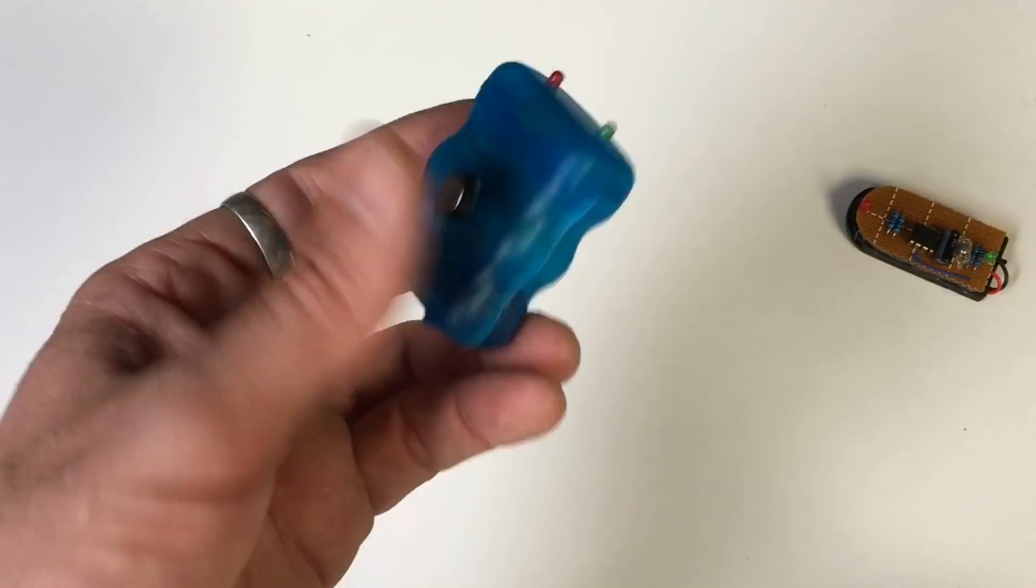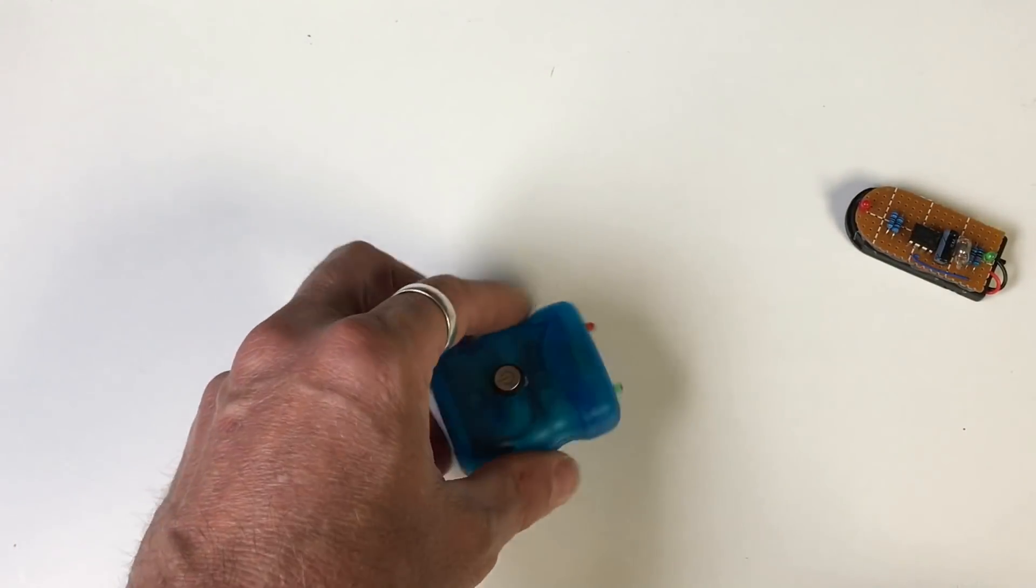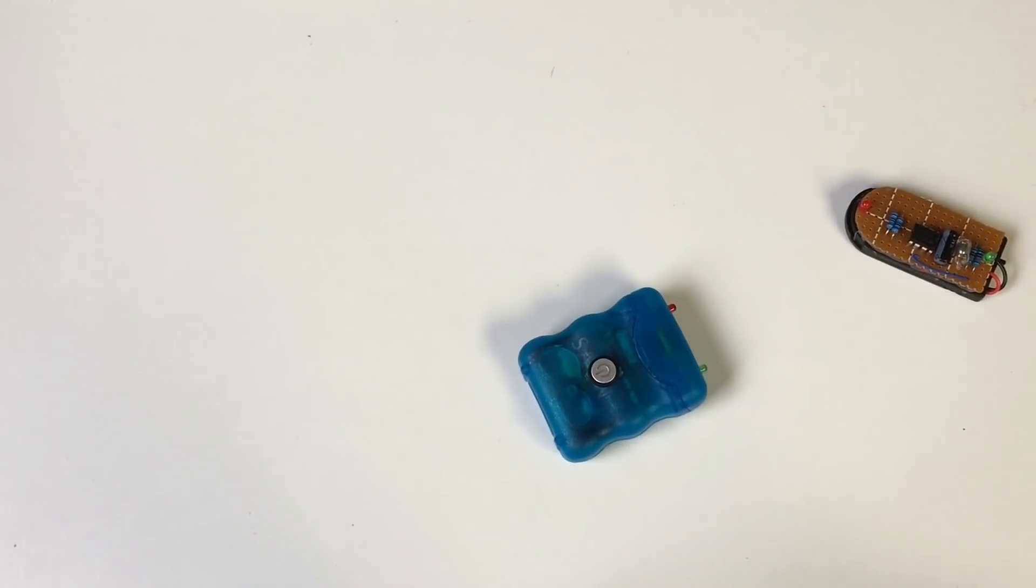So that's my 555 timer executive decision maker. Want to make your own? Check out the link. And yeah, thanks for checking this video clip out.